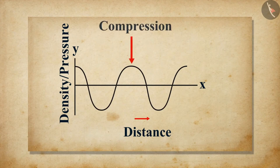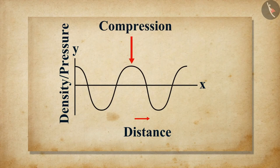The regions where particles are crowded are compressions. They are represented by the upper portion of the curve. The peak of the curve represents the maximum compression. Therefore, density and pressure are high in compressions.